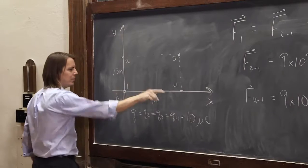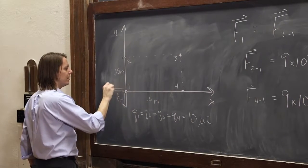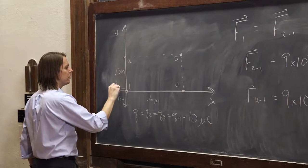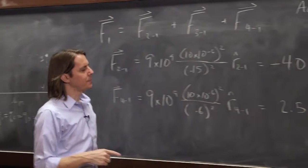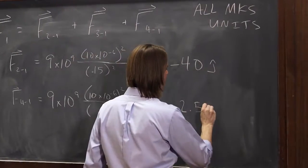R hat 4,1. Magnitude of 1 pointing that way. So this one is on the x-axis, so that's the i hat direction. And it's negative again, because the force is going in the negative direction of the axis.